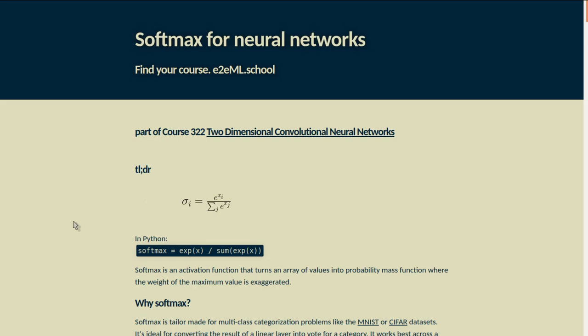Softmax is an activation function that turns an array of values into a probability mass function where the weight of the maximum value is exaggerated. It's tailor-made for multi-class categorization problems like the MNIST or CIFAR datasets.